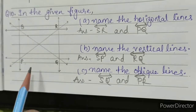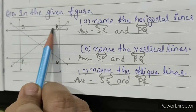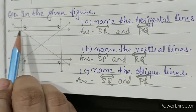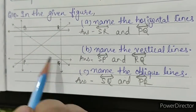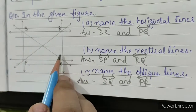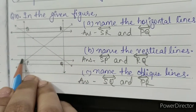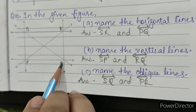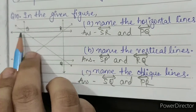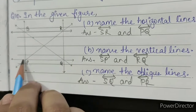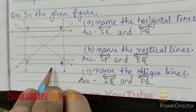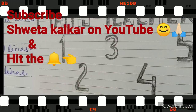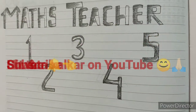SQ and PQ are horizontal lines, also called sleeping lines. SP and RQ are vertical, also called standing lines. SQ and PR are oblique, also called slanting lines. Thank you and have a nice day.